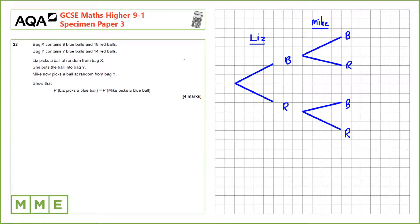Question 22. Bag X contains 9 blue balls and 18 red balls, and bag Y contains 7 blue balls and 14 red balls. Liz picks a ball at random from bag X and she puts it into bag Y. Mike then picks a ball at random from bag Y. Show that the probability that Liz picks a blue ball is the same as the probability that Mike picks a blue ball.